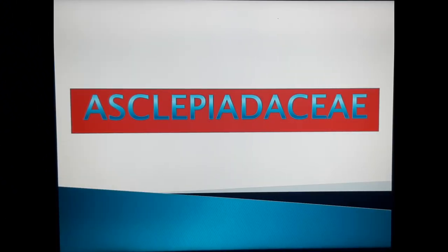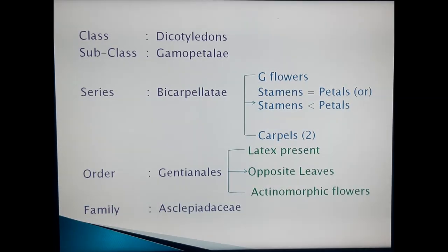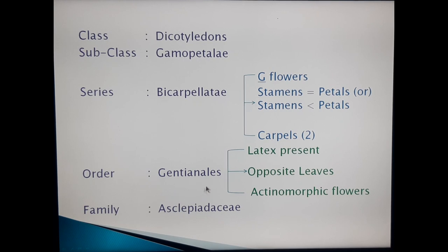Asclepiadaceae family classification: class is Dicotyledons, subclass is Gamopetalae, series is Bicarpellate, order is Gentianales, and family is Asclepiadaceae. Now we will discuss why this Asclepiadaceae family is kept in this particular series and particular order.